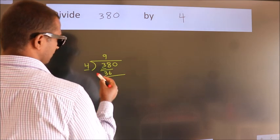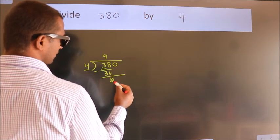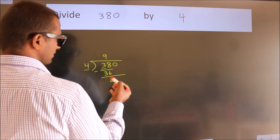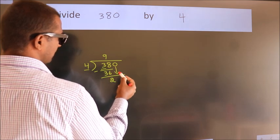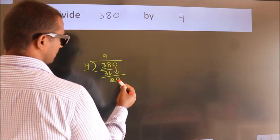Now we should subtract. We get 2. After this, bring down the beside number. So 0 down. So 20.